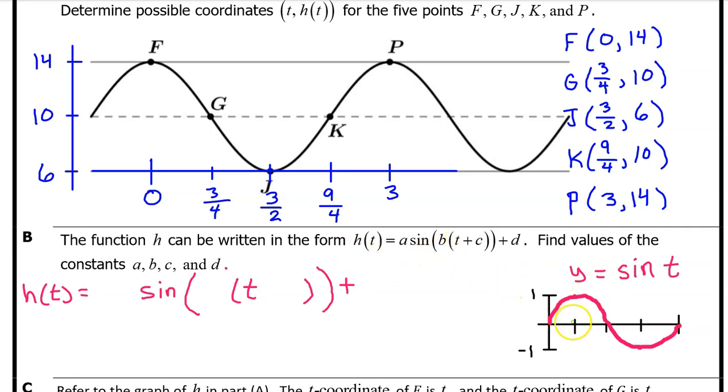h of t is the image of sine t after four transformations that correspond to the values of a, b, c, and d. So let's create an expression for h of t filling in the values of a, b, c, and d as we go. The a value is called the amplitude and it reflects a vertical dilation of the parent function. On the parent function, the distance from the midline to the maximum value is one unit. On the graph of h of t, the distance from the midline to the maximum value is four units. This is a vertical dilation by a factor of four. Therefore, the a value is four.